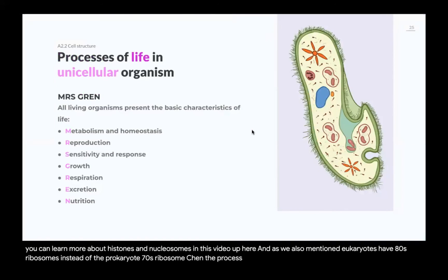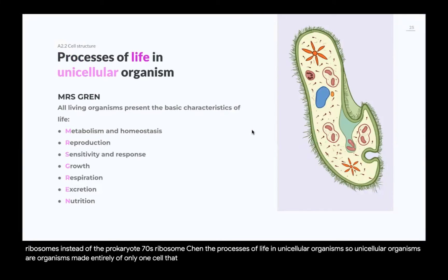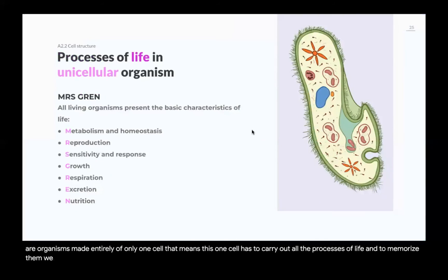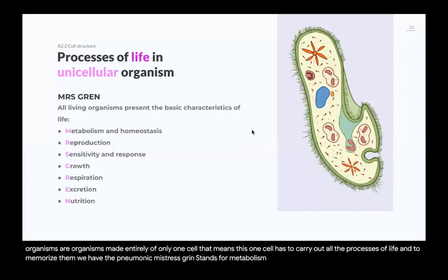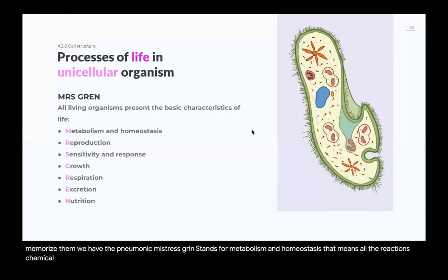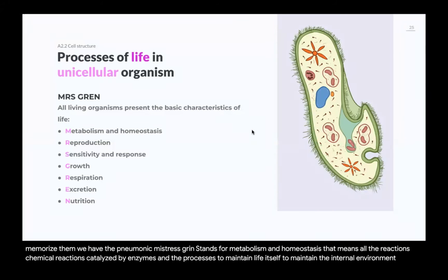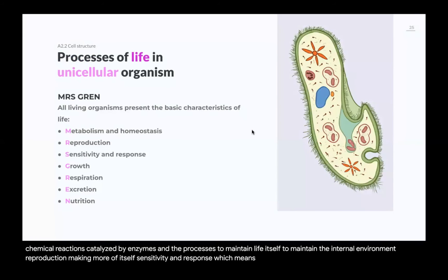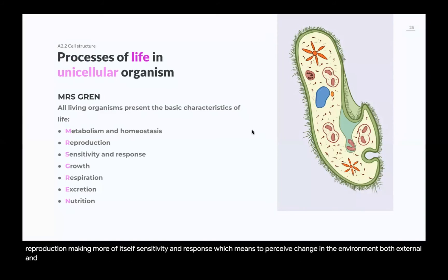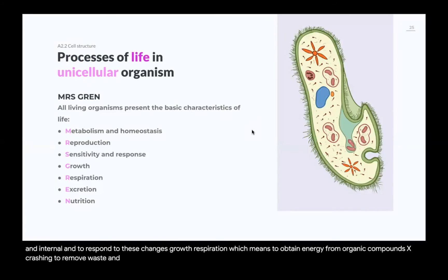Unicellular organisms are organisms made entirely of only one cell, meaning that one cell has to carry out all the processes of life. To memorize them, we use the mnemonic Mr. Graham: Metabolism and homeostasis (all chemical reactions catalyzed by enzymes and maintaining the internal environment), Reproduction (making more of itself), Sensitivity and response (perceiving and responding to internal and external changes), Growth, Respiration (obtaining energy from organic compounds), Excretion (removing waste), and Nutrition (acquiring molecules to make all these processes possible).